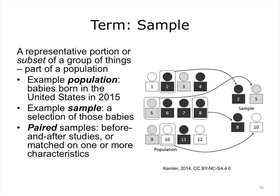The next term is sample. Let's say you wanted to find out the average weight of babies born in the United States in 2015 — that would be the population you would be studying. It would be very difficult, if not impossible, to get the weight for every baby. Instead, you would get weights from a representative portion of the population and then extrapolate the average weight of all babies. This portion or subset is called a sample. Statisticians use a variety of techniques to determine that the sample is representative of the entire population. Paired samples are also used — in this case, the samples are matched, such as the same patient before and after a treatment, or patients with similar characteristics such as age, gender, and diagnosis.